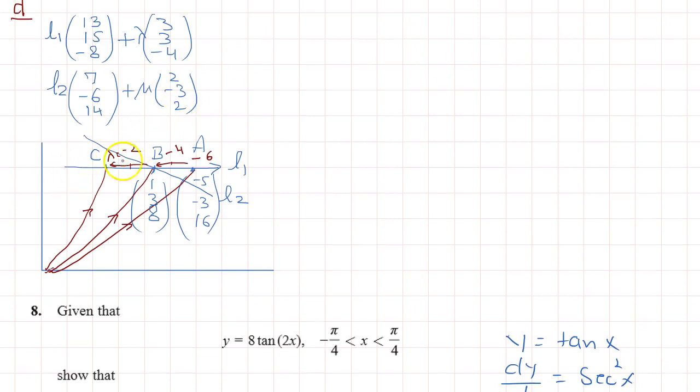So to get the position vector of C we are going to use lambda. We are going to use L1 because this is on L1. So what we are going to do is (13, 15, -8) plus we are going to put the value of lambda -2 and that is (3, 3, -4).